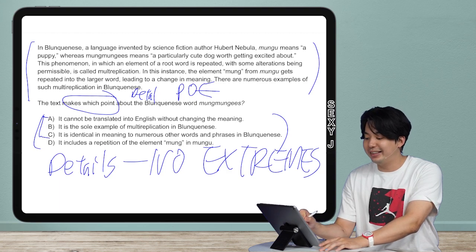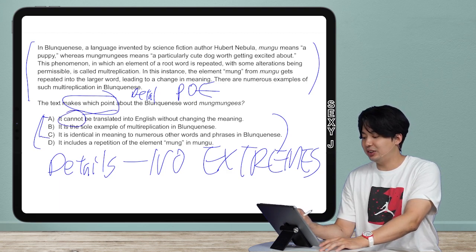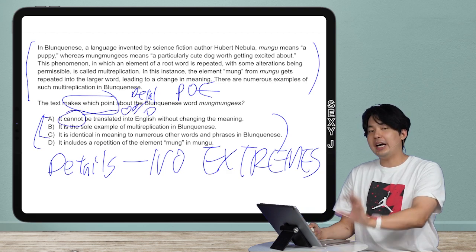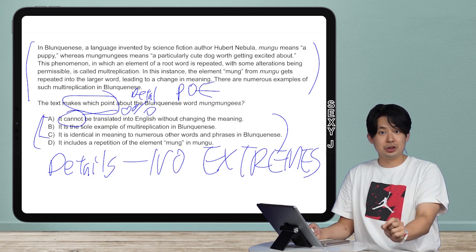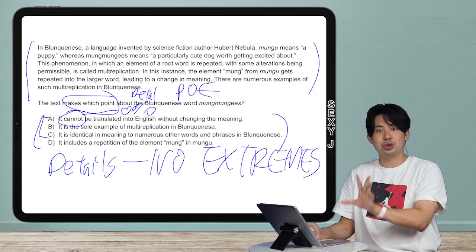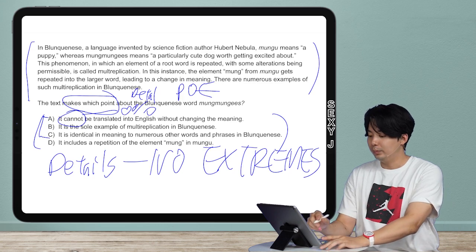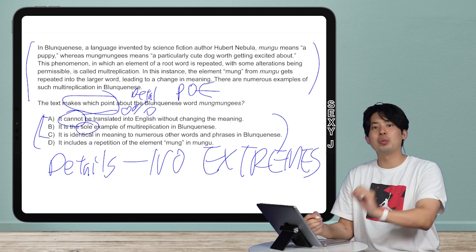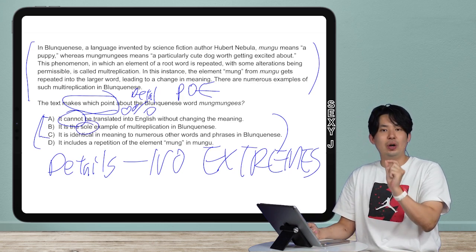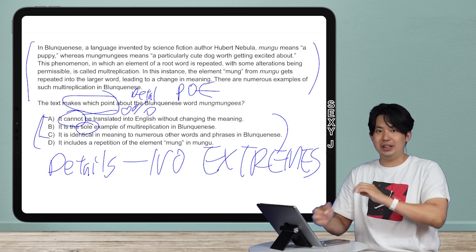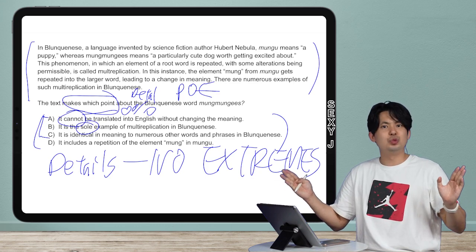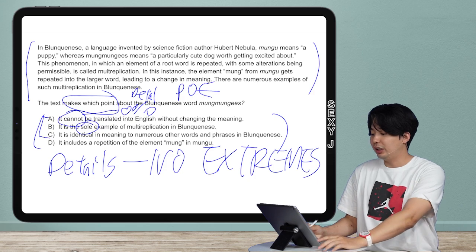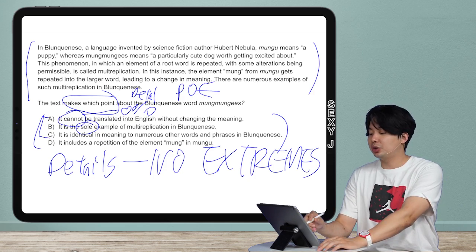So A: I have 'cannot,' that means zero percent. Any answer that means zero percent chance or hundred percent chance, those are extremes, you take them out. B: the word 'sole,' that means this is the only example in the world, there isn't anything else, really unlikely. And then C, we'll get. So let's get rid of A and B first.